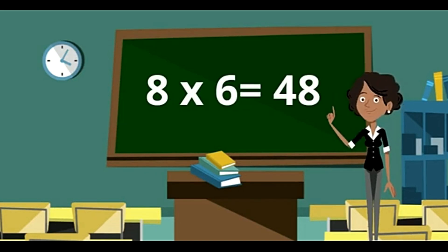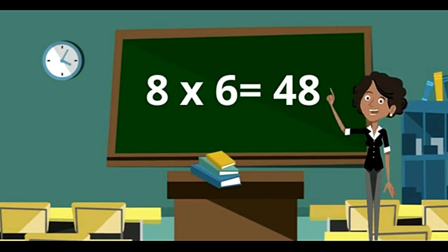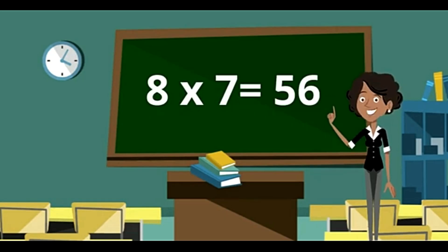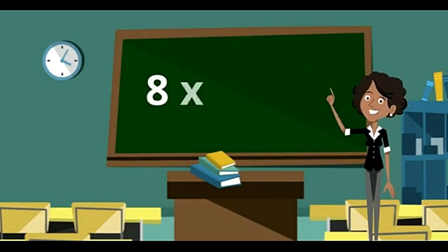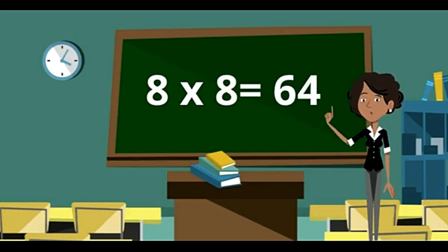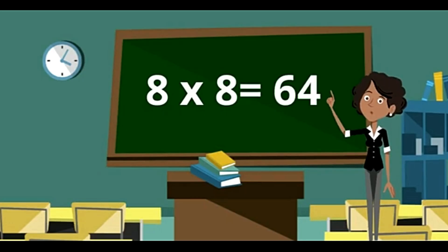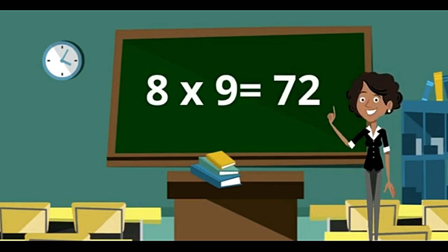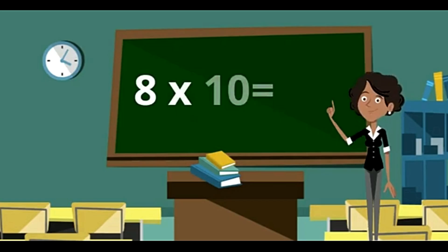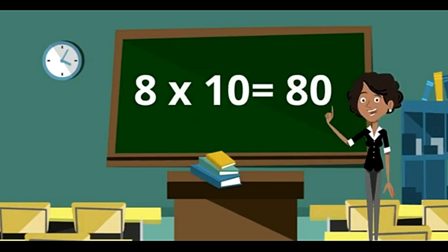8 sixes are 48. 8 sevens are 56. 8 eights are 64. 8 nines are 72. 8 tens are 80.